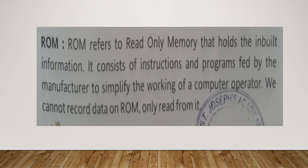The next type of primary memory is ROM, and ROM means Read Only Memory. As the name suggests, read only means we can only read this memory — we cannot save anything into it. Read only memory holds the inbuilt information. It consists of instructions and programs fed by the manufacturer to simplify the working of the computer operator. We cannot record data on ROM, we can only read from it. We cannot store anything on it. This is also a part of primary memory, or internal memory.